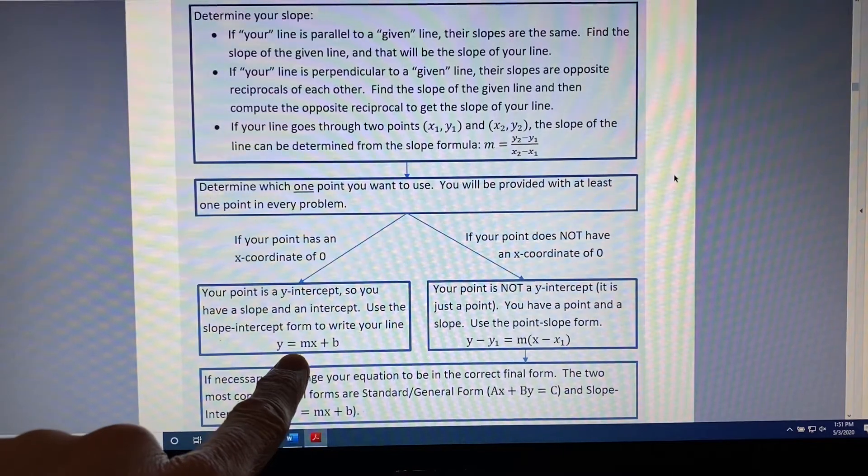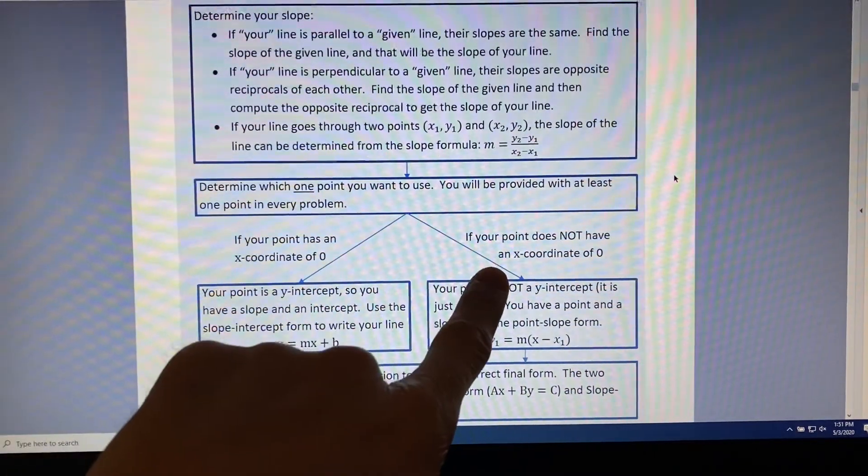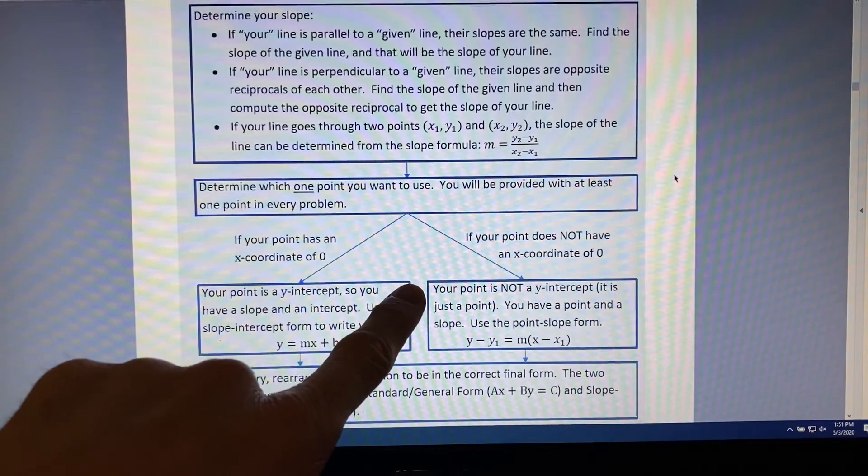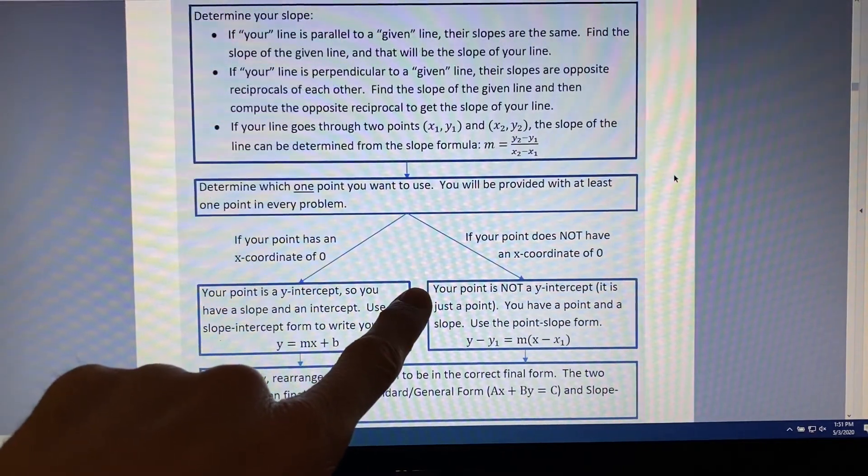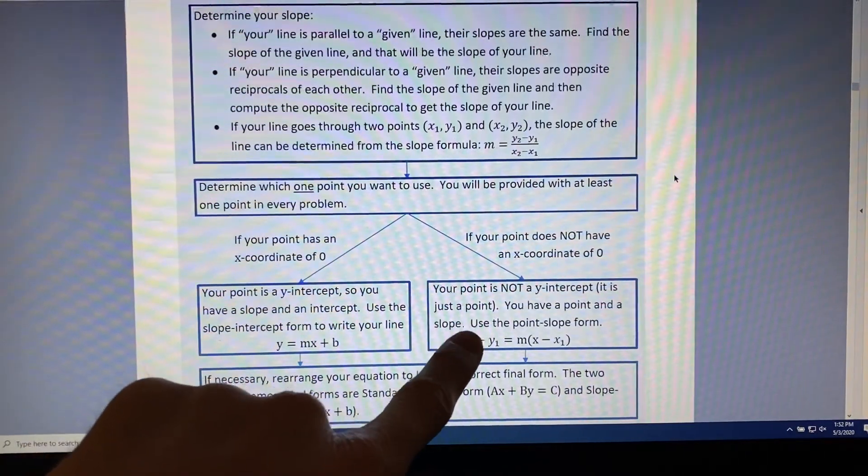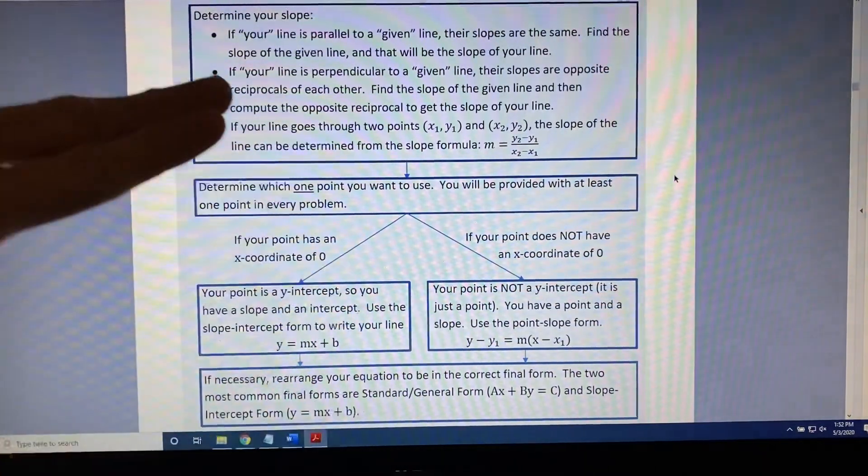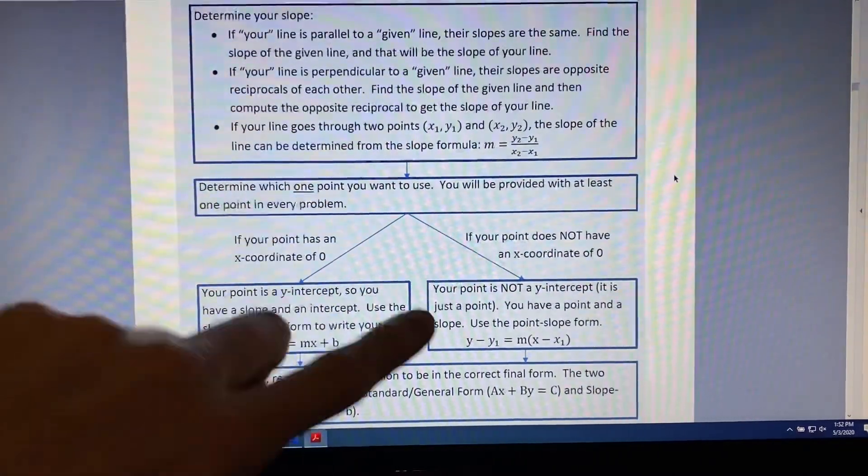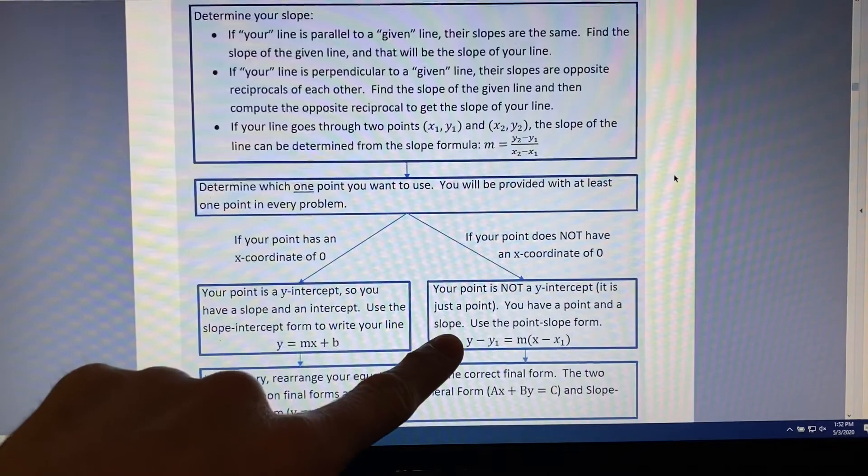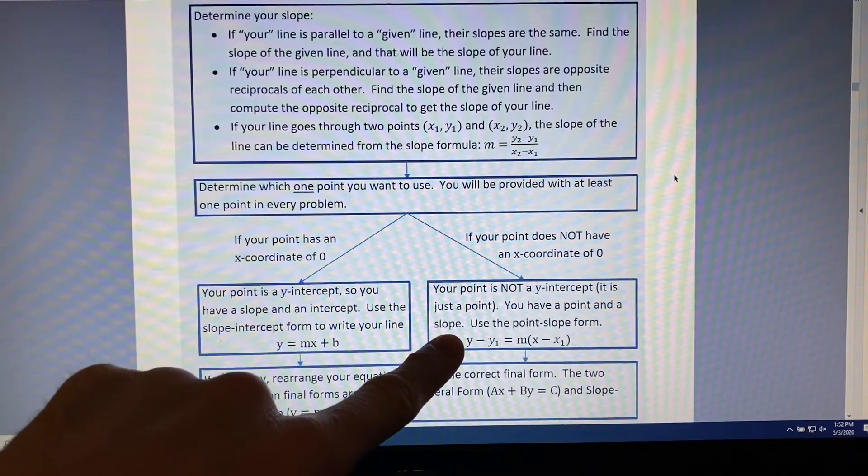Now, what if instead you had taken the path to the right? Well, that means that you do not have an x-coordinate of zero, which means your point is not a y-intercept. It's just a plain simple point. So, what do you have by the time you reach this box of the flowchart? You have a slope and a point. So, use the point-slope form.